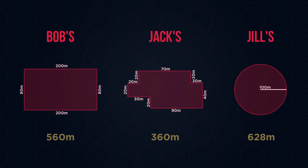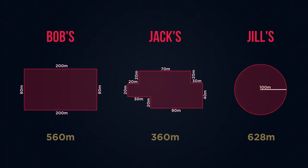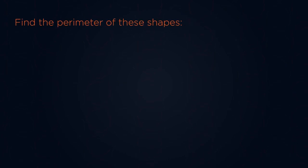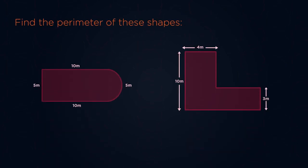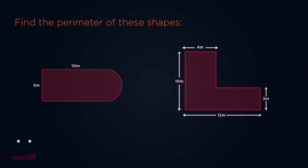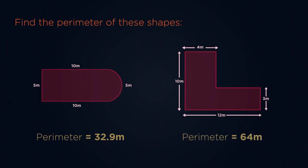Sometimes more complicated perimeters may require you to use both the circumference of a circle and general side lengths. Here's an example to finish up. Can you find the perimeter of these compound shapes? Pause the video and give them a go. Did you get 32.9 metres and 64 metres?